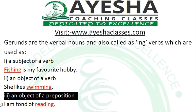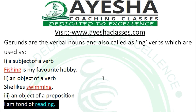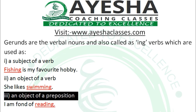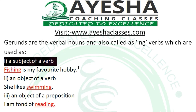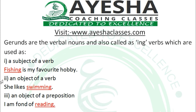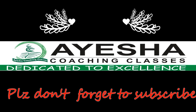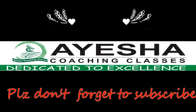The third use is a gerund as the object of a preposition. For example: 'I am fond of reading.' Here, 'reading' follows the preposition 'of'. So to summarize: in the first example we use the gerund as a subject, in the second example as an object of a verb, and in the third example as an object of a preposition.